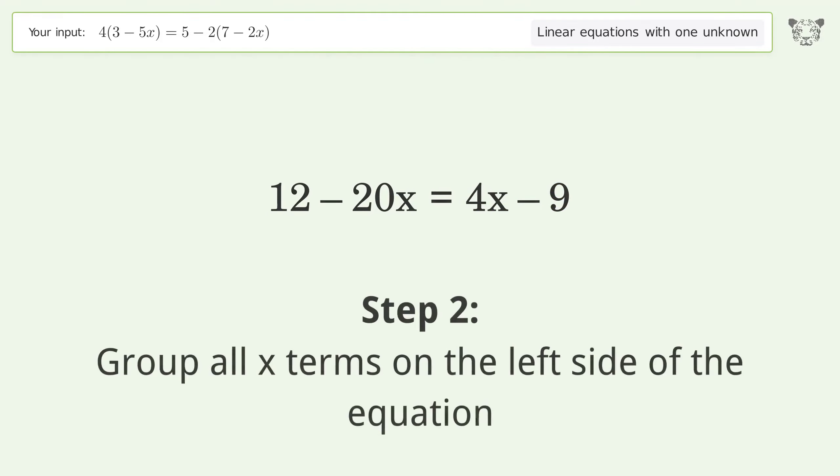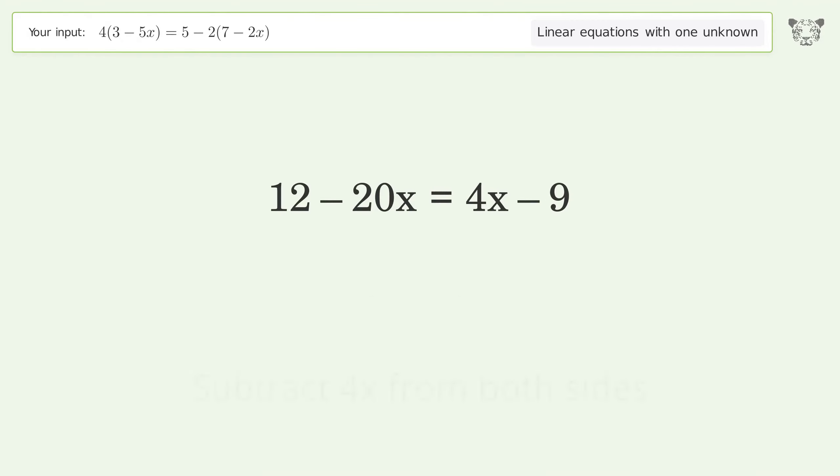Group all x terms on the left side of the equation. Subtract 4x from both sides, group like terms, and simplify the arithmetic.